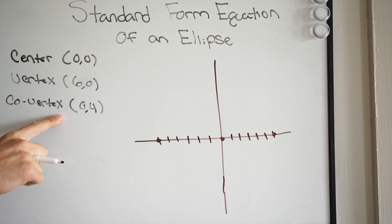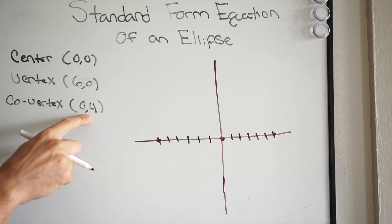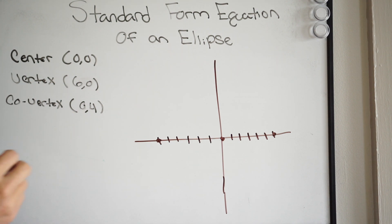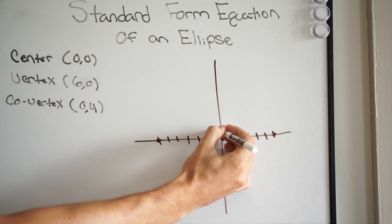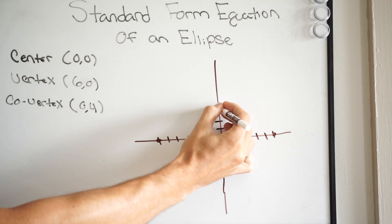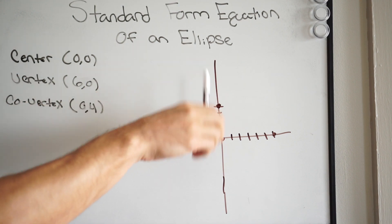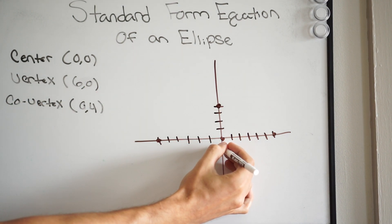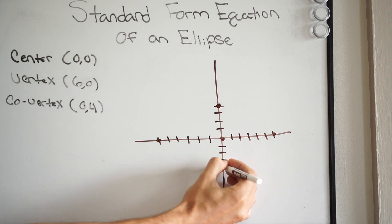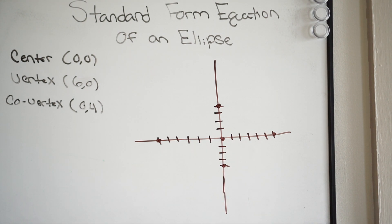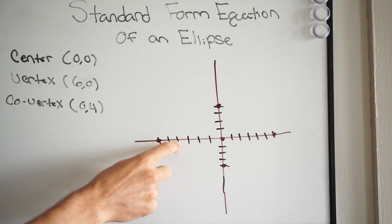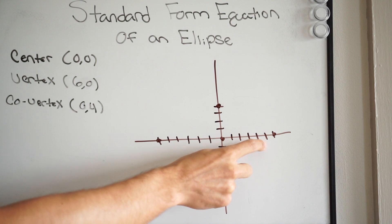Let's put our co-vertices on here. One is occurring at (0, 4), so we go up 4, and in the opposite direction starting at the center we go down 4 to negative 4. Now, the foci always occur on the major axis — we have two of those. They are two fixed points on the major axis, occurring somewhere around here.